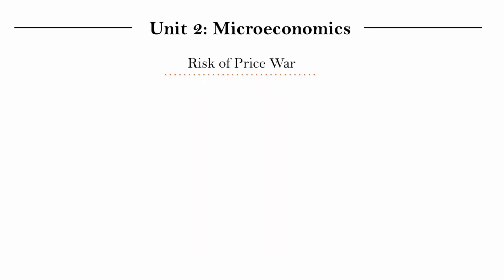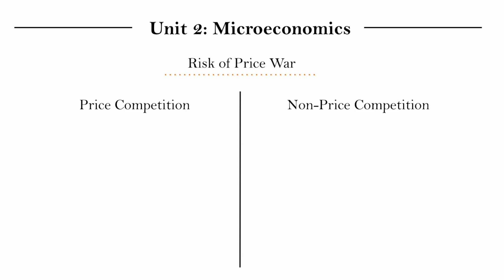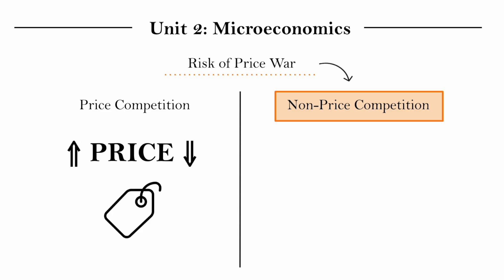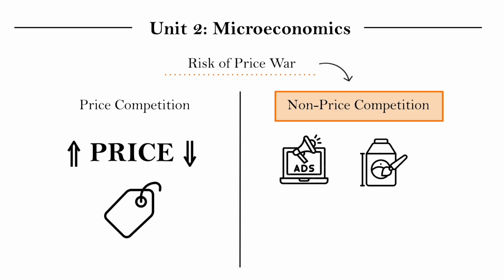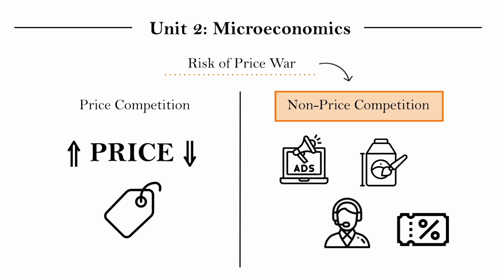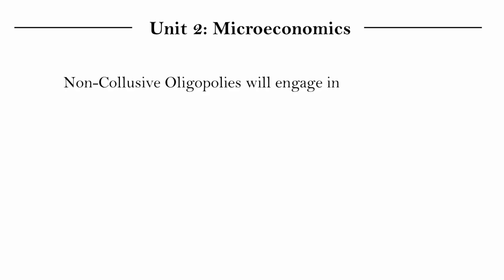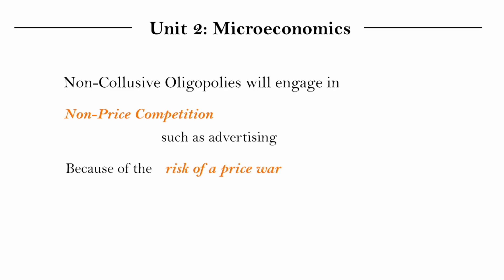This looming risk of a price war is actually what results in the selection of non-price competition in an oligopoly. Price competition is exactly what it sounds like — trying to attract customers by changing the price of the product. Non-price competition involves things unrelated to price, such as advertising, packaging, how nice the customer service is, or having a coupon system. So to summarize, non-collusive oligopolies will engage in non-price competition, such as advertising, because of the risk of a price war.